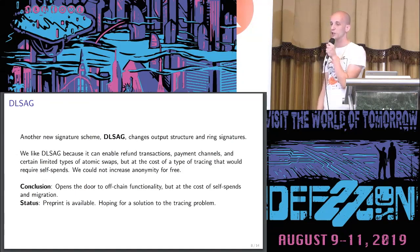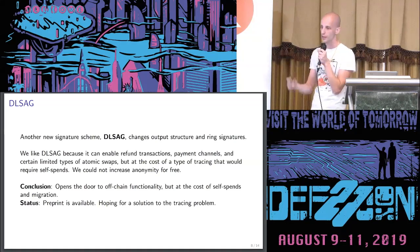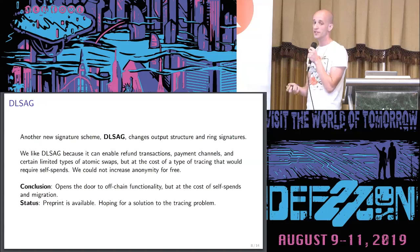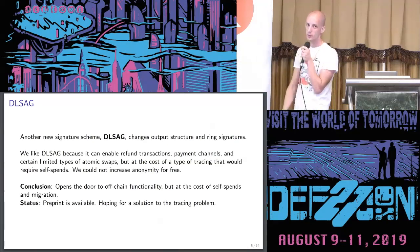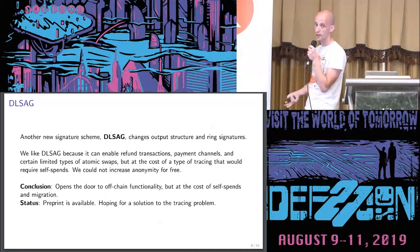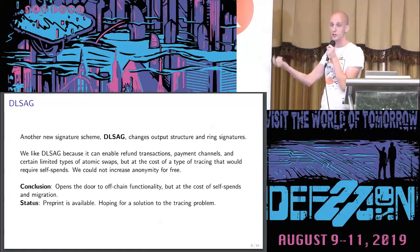Another new signature scheme called DLSAG actually changes the structure of Monero's outputs and ring signatures in ways that could enable refund transactions non-interactively, payment channel networks, and very limited kinds of atomic swaps depending on curve choice. The downside is the scheme as currently set up would enable a particular kind of tracing where you could detect when certain spends occur — meaning you'd have to spend funds to yourself to break that linkage. From a scaling perspective, you couldn't increase anonymity for free. So you'd open the door to off-chain functionality at some cost involving self-spending. A preprint is available and we're hoping there may be a solution to the tracing problem.